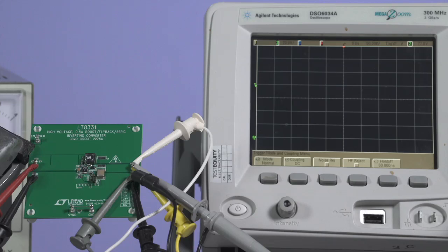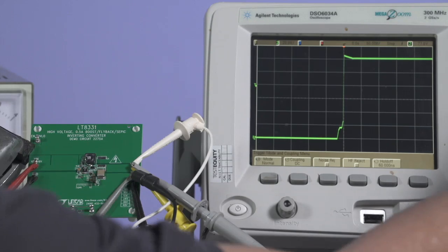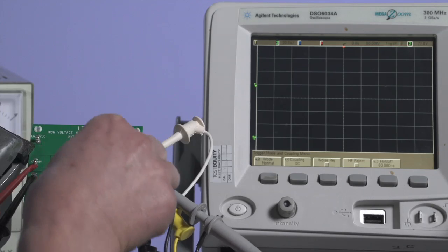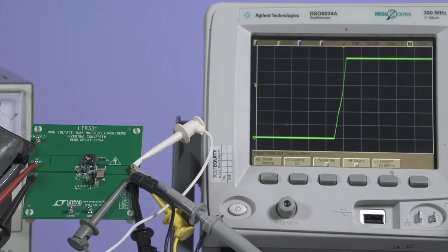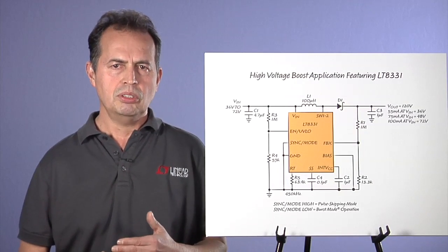The LT8331 has programmable soft start which allows you to vary the switch current by simply changing the value of a capacitor. This will enable you to control inrush current problems.